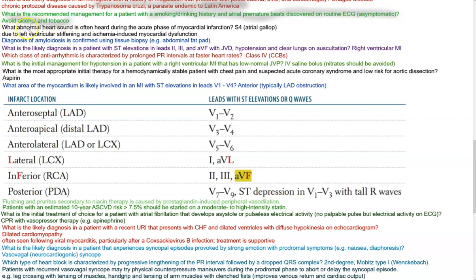What abnormal heart sound is often heard during the acute phase of myocardial infarction? That would be S4. S4 is associated with hypertension, hypertrophic cardiomyopathy, and the acute phase of MI due to left ventricular stiffening and ischemia-induced myocardial dysfunction. Also: diagnosis of amyloidosis is confirmed using tissue biopsy — specifically fat pad biopsy, using Congo red stain.